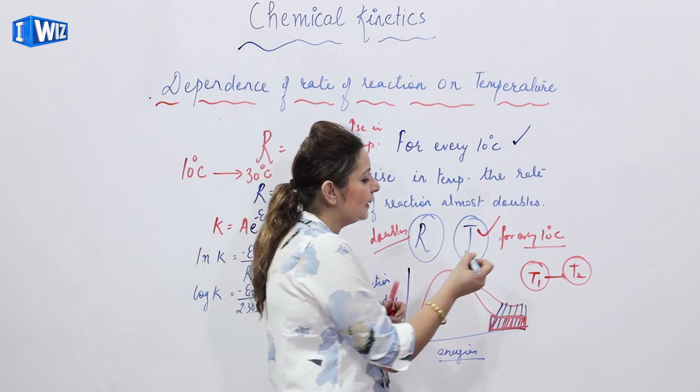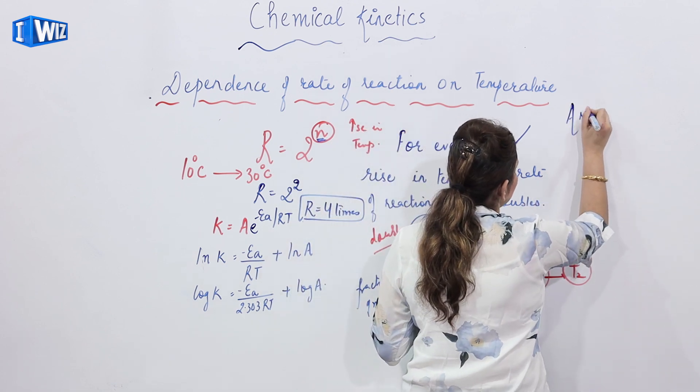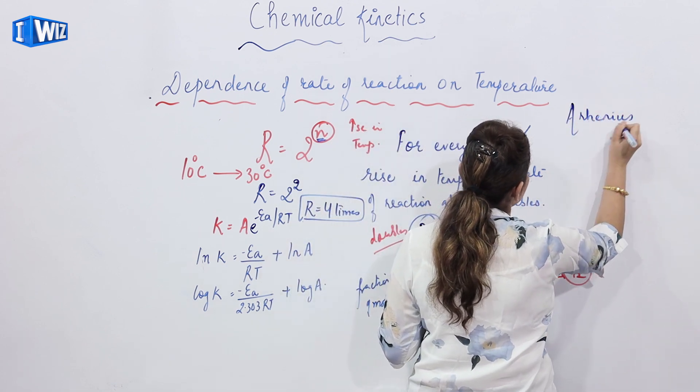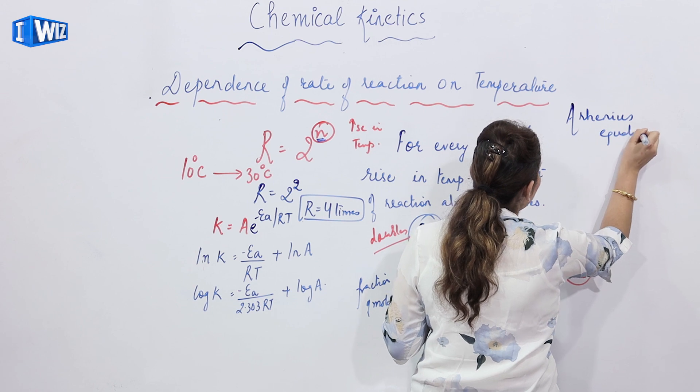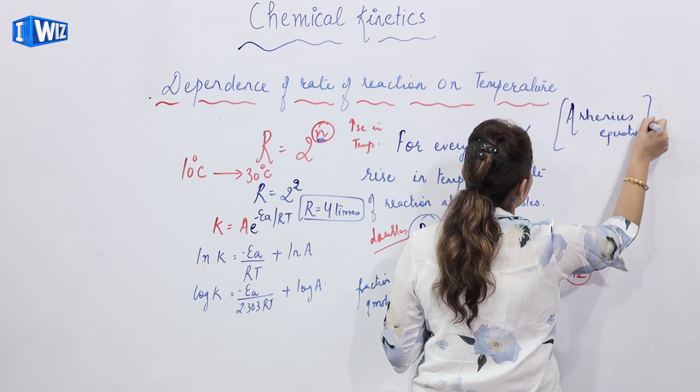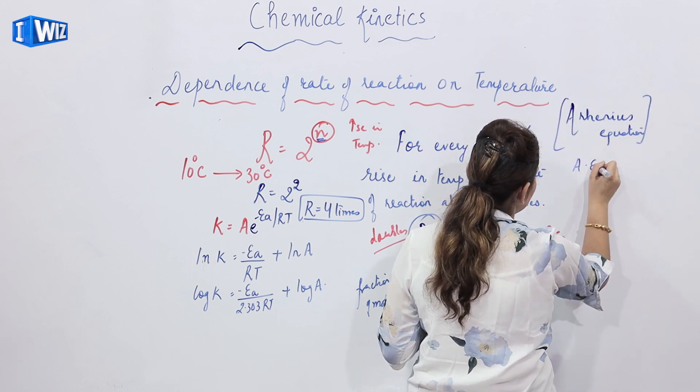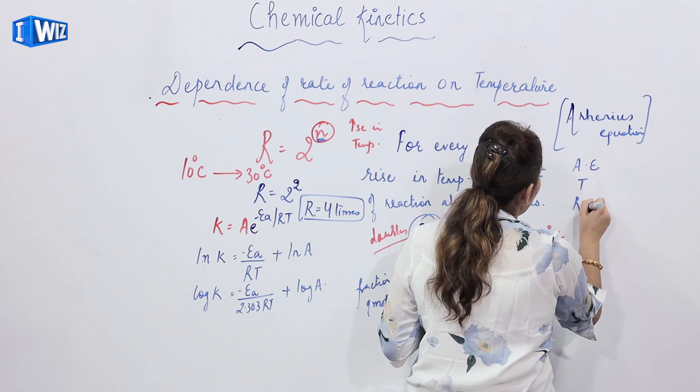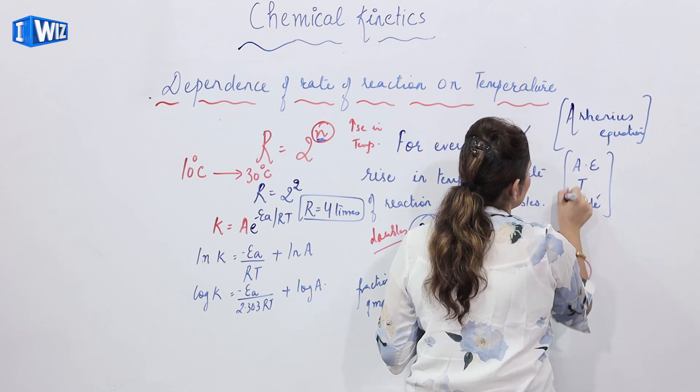Now, we have an Arrhenius equation. We have an Arrhenius equation which actually explains the relationship between the activation energy, the temperature and rate of reaction.